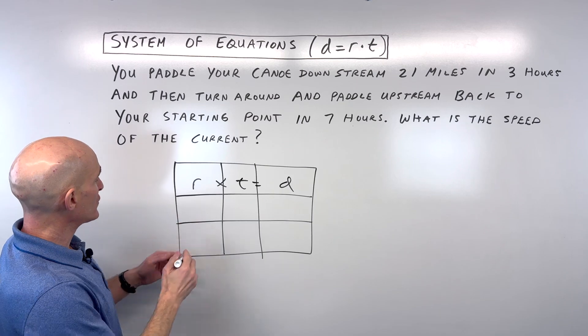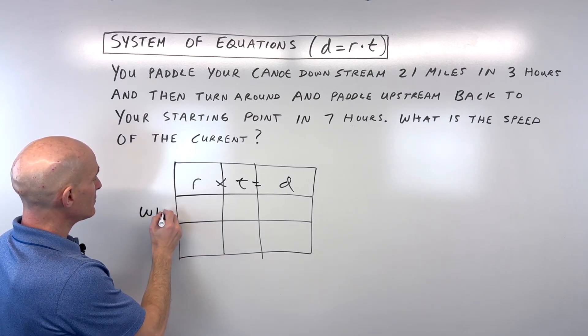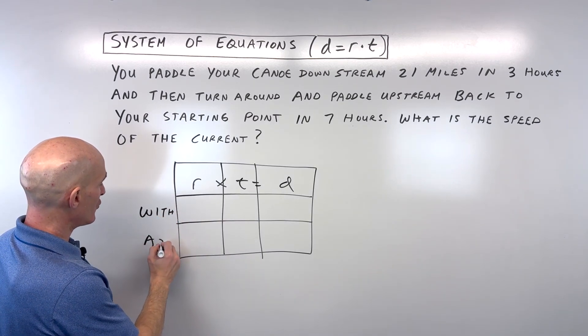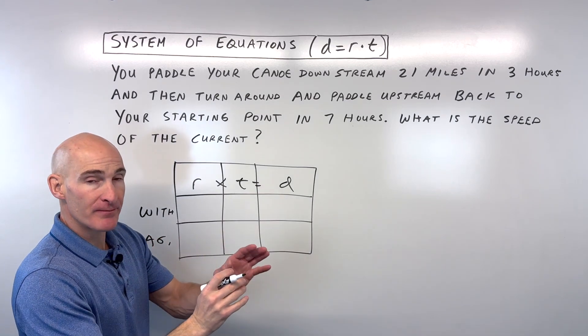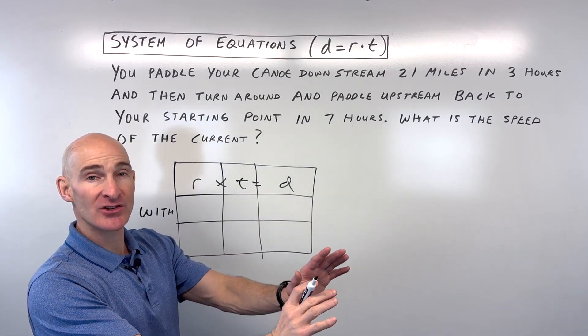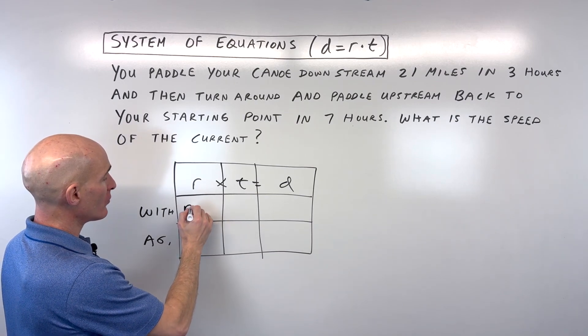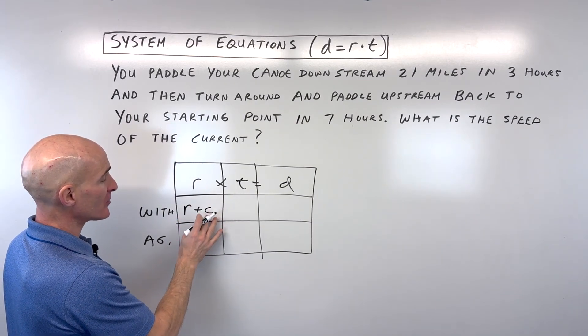In this case, we'll say you're going with the current, and then we're going to say you're going against the current. So when you're going with the current, the current's pushing you or it's adding to your speed. So you can think of your rate plus the speed of the current C.